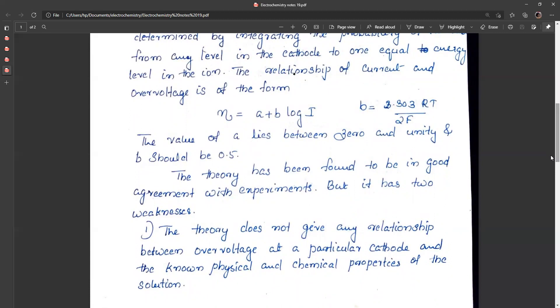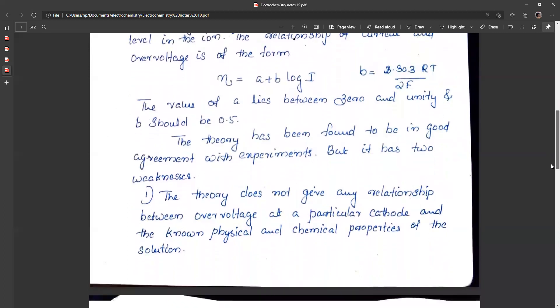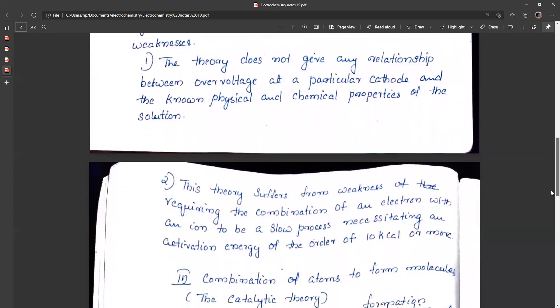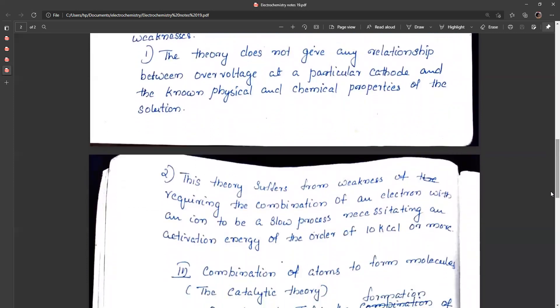This theory suffers from the weakness of requiring combination of an electron with an ion to be a slow process necessitating an activation energy of the order of 10 kilocalories per mole, but this is not true in our experiments. These are the two drawbacks of this slow discharge theory.